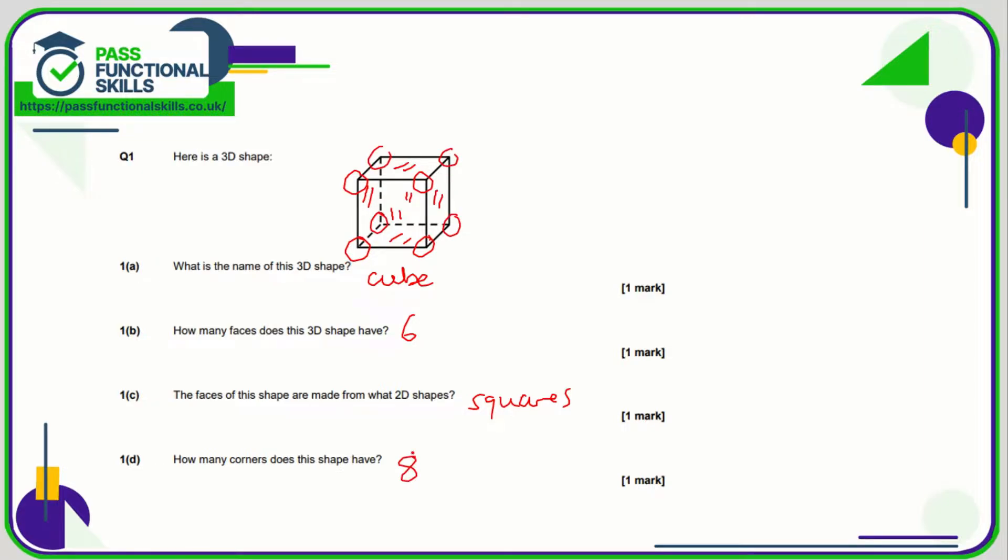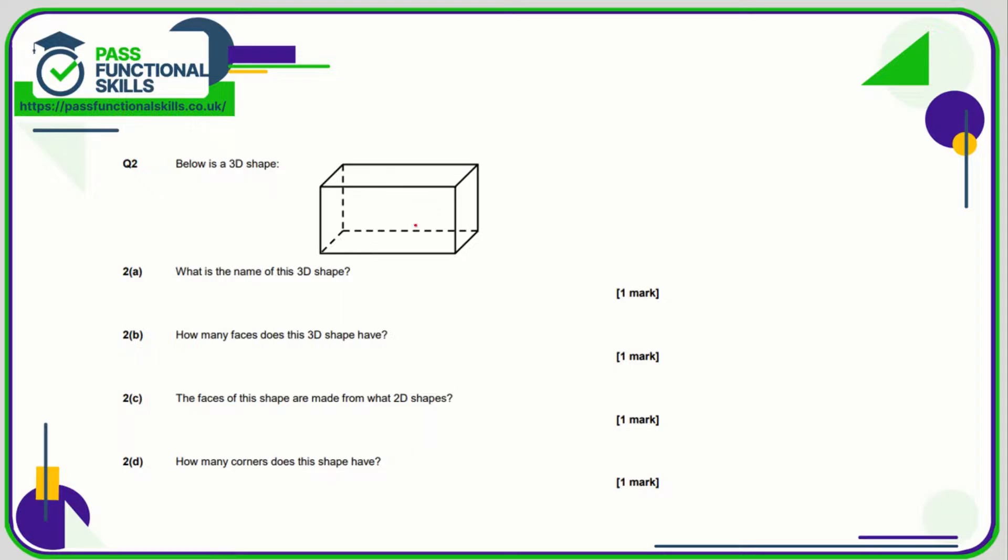This here is a cuboid. How many faces does it have? Exactly the same as a cube, which is six - front and back, left hand side, right hand side, top and bottom. And the faces are made from rectangles.